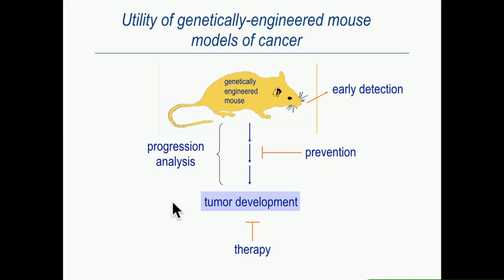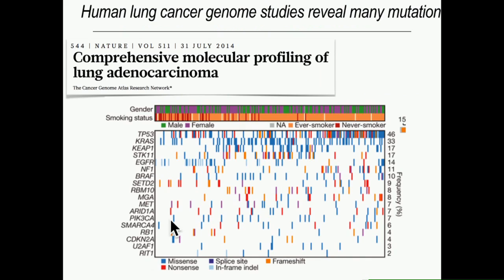Once those mice are in hand, one can do lots of interesting experiments related to disease progression, methods to detect the disease at earlier stages, to treat it more effectively, or to prevent its arrival. This situation has become more complex because there are literally hundreds of genes mutated in human cancers. This example from a study of non-small cell lung cancer led by Matthew Meyerson and the TCGA shows 17 frequently or statistically significantly mutated genes, including KRAS and P53. Really no two individuals are the same — each person has a different constellation of mutations.